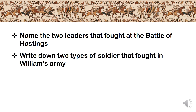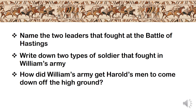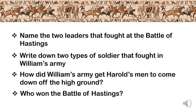Question two: write down two types of soldier that fought in William's army. Question three: how did William's army get Harold's men to come down off the high ground — how did William get Harold's men to break that shield wall and come down off the hill? And question four: who won the Battle of Hastings? Pause the video here, have a go at answering these four questions, then we'll come back and I'll give you the answers.